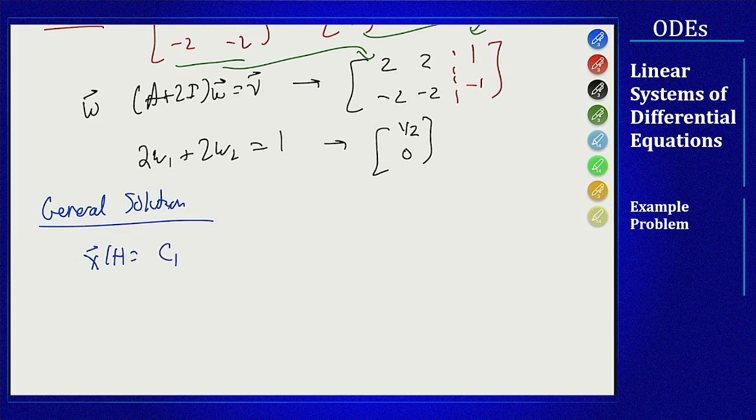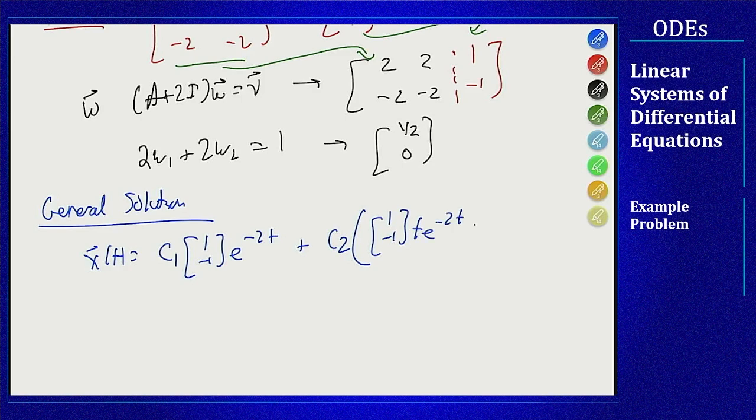From that, x(t) is c₁ times eigenvector 1, minus 1, e to the minus 2t plus c₂ times the complicated term 1, minus 1, t e to the minus 2t plus one half, zero, e to the minus 2t. Now how do we sketch this? What does this look like?